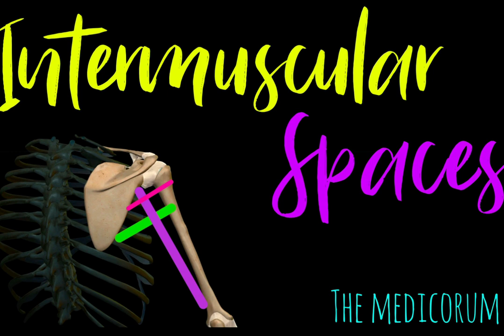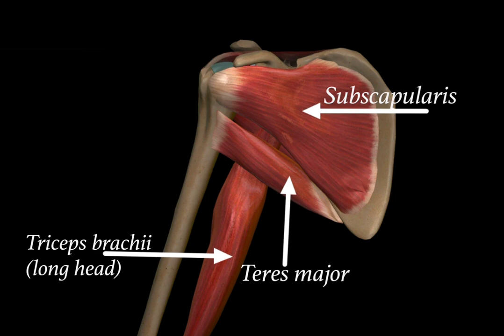This is the anterior view of the scapula, and we find subscapularis muscle attached to it. Below the subscapularis muscle there lies teres major muscle, and also the long head of triceps brachii is seen. Hence anteriorly we find the long head of triceps brachii, teres major, and subscapularis muscle.